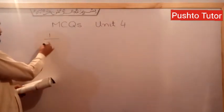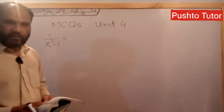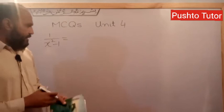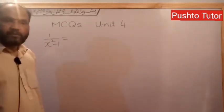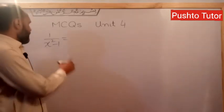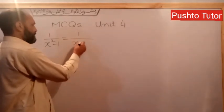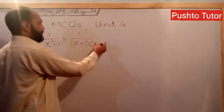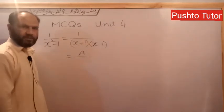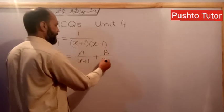Question 1: convert 1 over x² minus 1 into partial fractions. Look at the options and mark which one is correct. This question also appears in exercise 4.1 as question number 3. First, factorize the denominator: 1 over (x+1)(x-1). Then write it as A over (x+1) plus B over (x-1), since these are linear non-repeated factors.